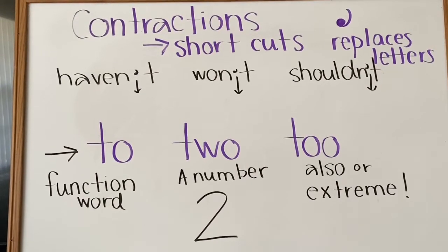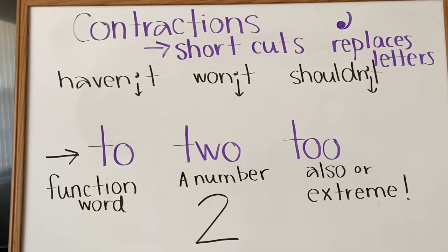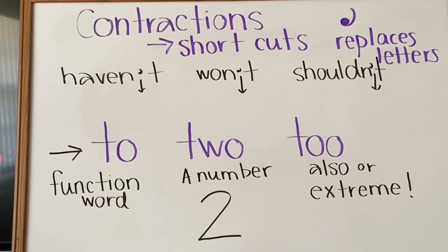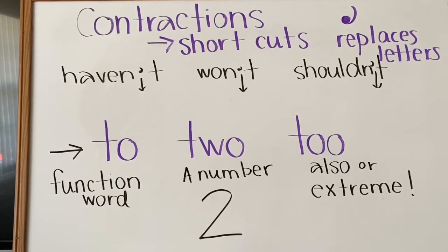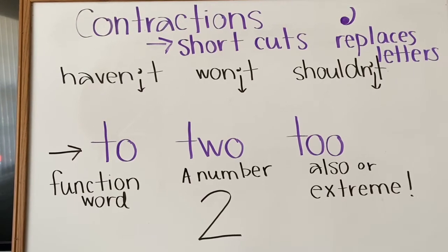Then I have the word shouldn't. What two words make up the word shouldn't? That's right. Should, not. And what letter does the apostrophe replace? The apostrophe replaces the letter O in the word shouldn't.